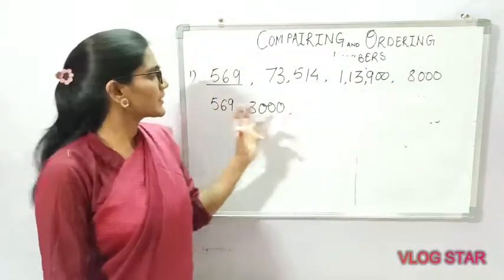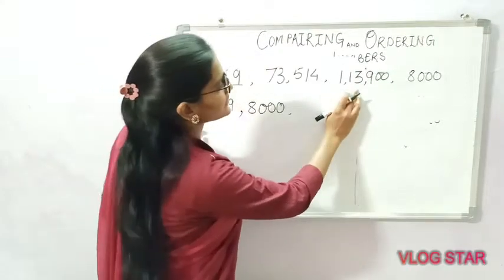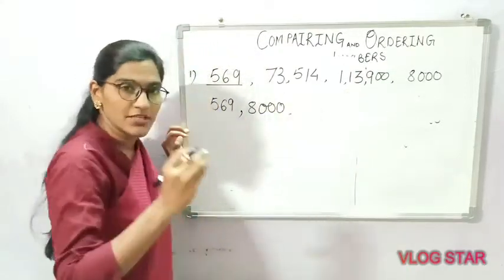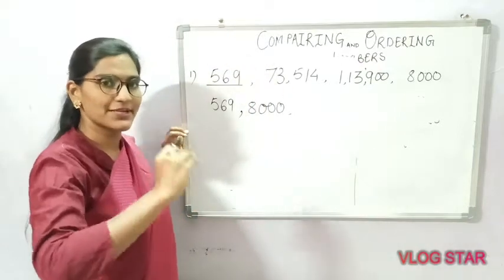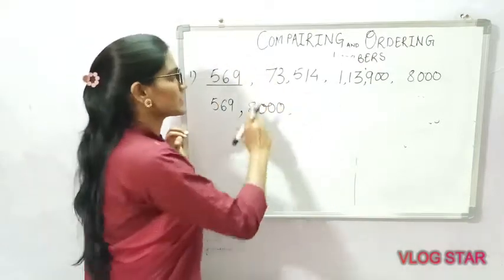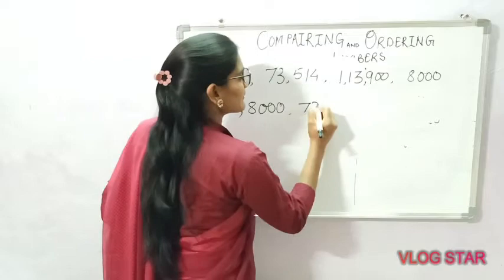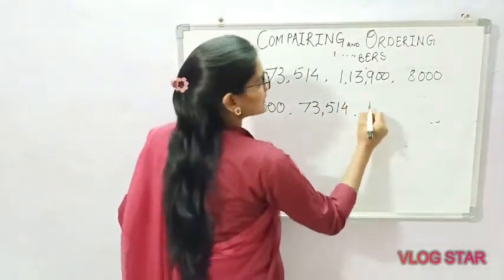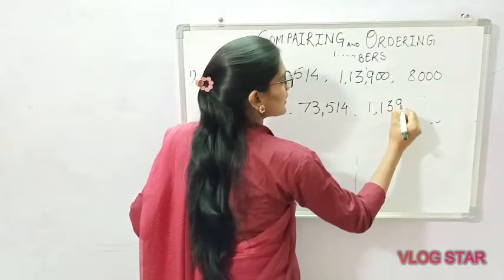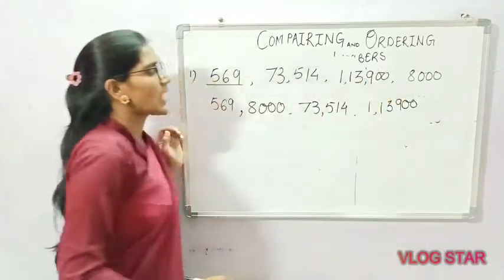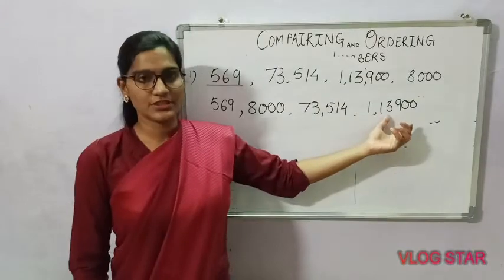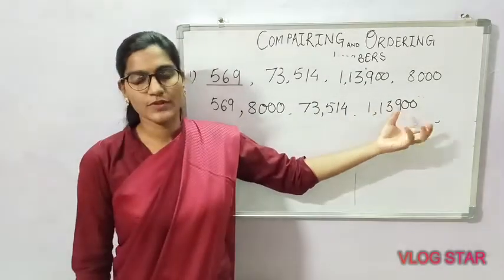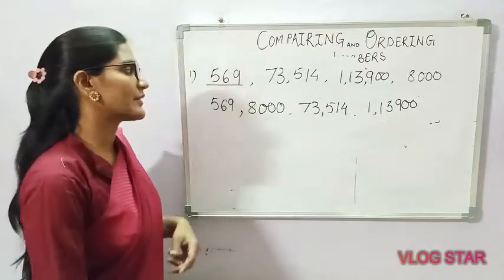Now we move to the five-digit number. Here we have a six-digit number and a five-digit number. Since we are arranging least to greatest, we take the five-digit number first — that is 73,514. Then only the six-digit number remains — that is 1,13,900. So the ascending order is: 569, 8,000, 73,514, 1,13,900.